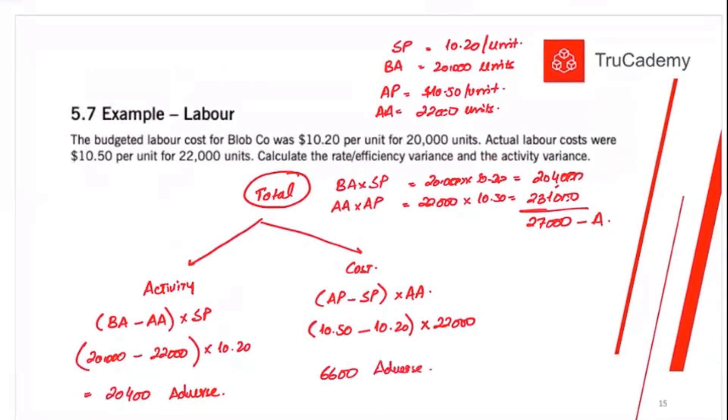Now let's write down a summary here. Activity variance of the labor. This is 20,400. The cost variance or price variance is 6,600 and both are adverse. And the total is 20,400 plus 6,600 equals 27,000 adverse. This is exactly same as the total variance that we have calculated.